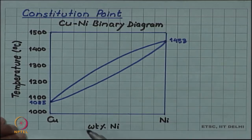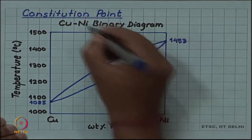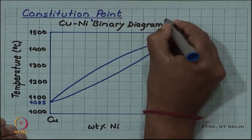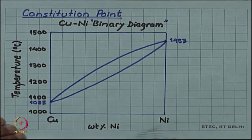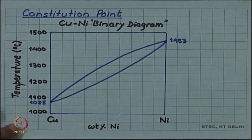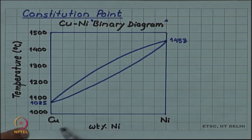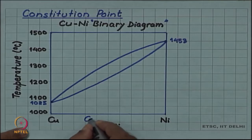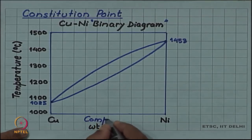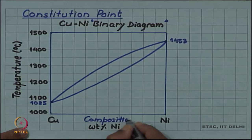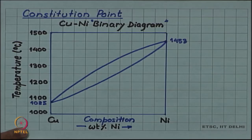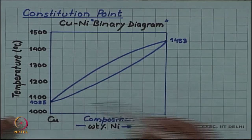As we have seen, we will mainly focus on binary diagrams, which means two components. In this particular example, the two components are copper and nickel, written on the x-axis, and temperature is on the y-axis. Our thermodynamic variables are composition — expressed here as weight percent nickel — and temperature.